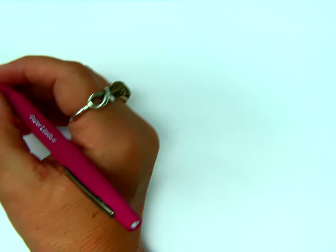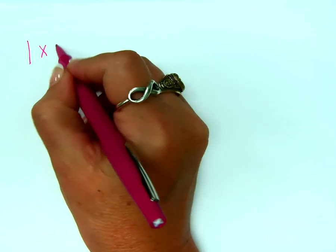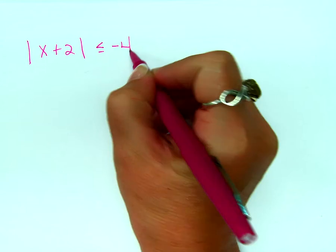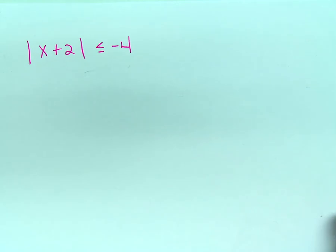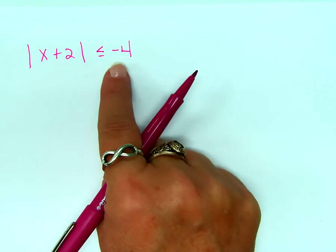There's a couple things that I want to talk about that showed up on your homework last night that some of you did really good at and some of you did the opposite of. Okay, so let's talk about these real quick. Absolute value of x plus 2 is less than or equal to negative 4. Now, the problem on your homework was not this exact problem. I just want to be able to talk in general.